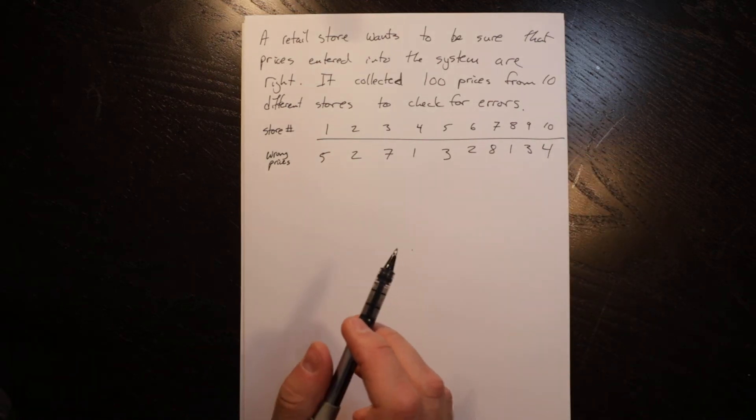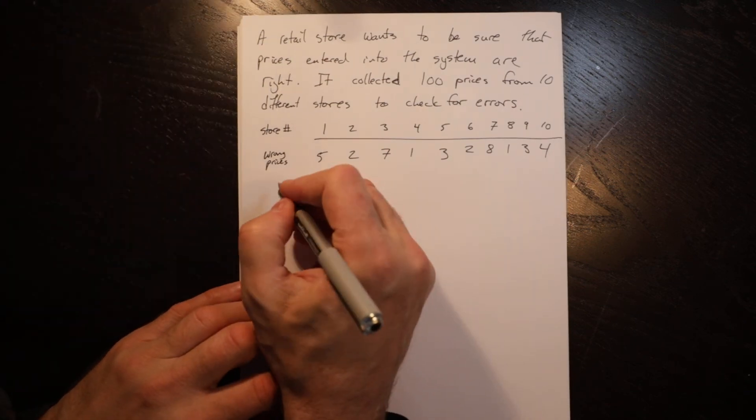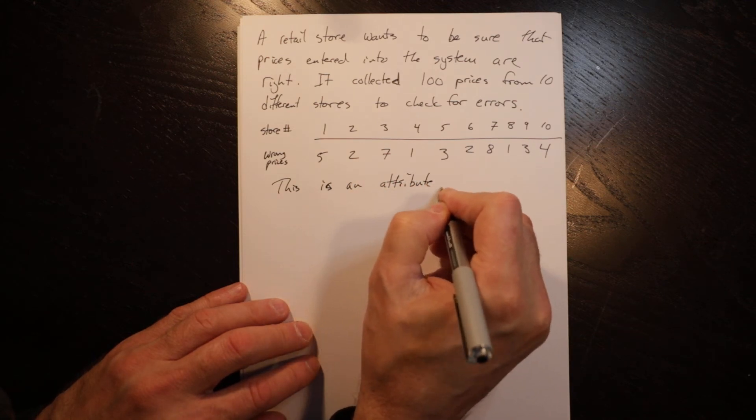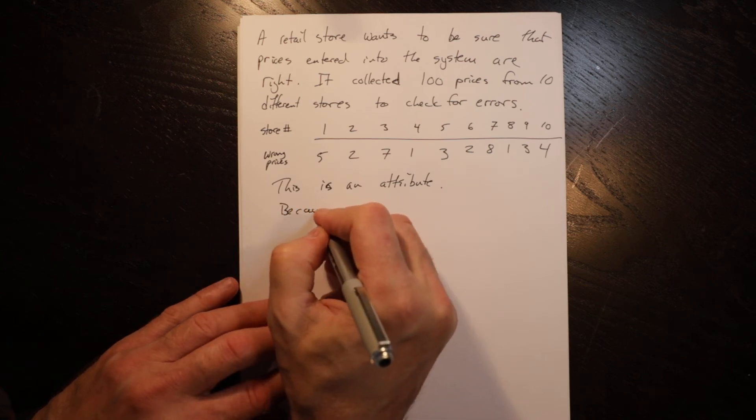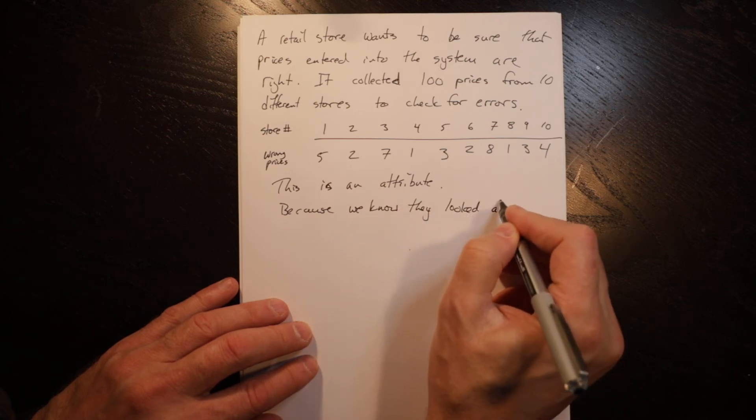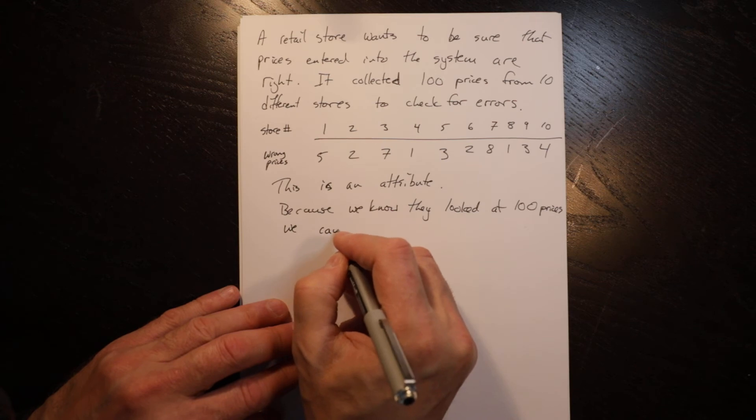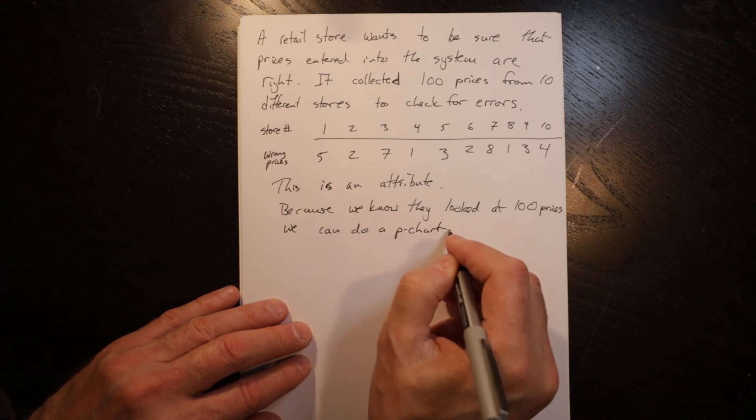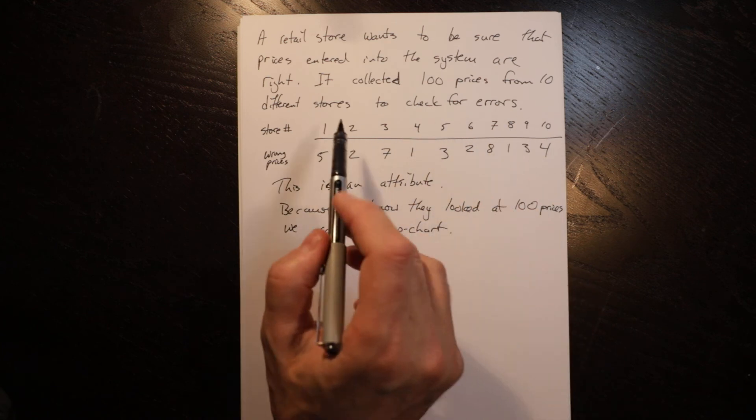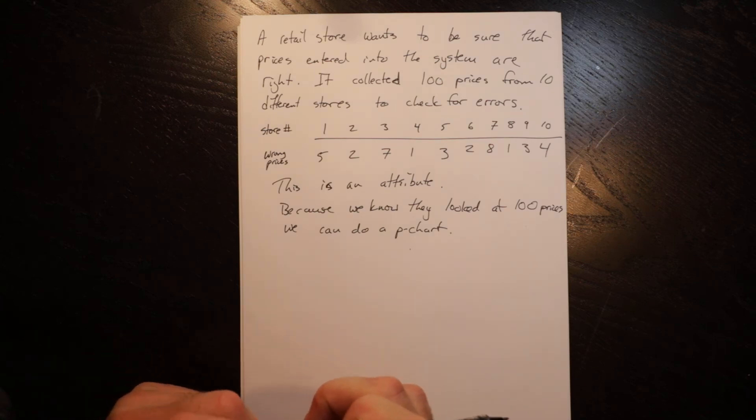In this circumstance we know price is right or wrong. We don't have a measure of the price we just know it's right or wrong. So we know this is an attribute. So we know that this will be either a P chart or a C chart. Now, because we know they looked at 100 prices, we can do a P chart. So this is 5 out of 100, this is 2 out of 100, this is 7 out of 100. So this is a P chart. When we can do a P chart, we should do a P chart. It is preferable to a C chart.